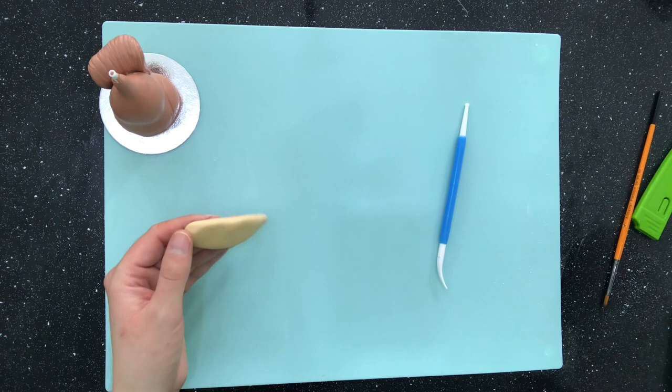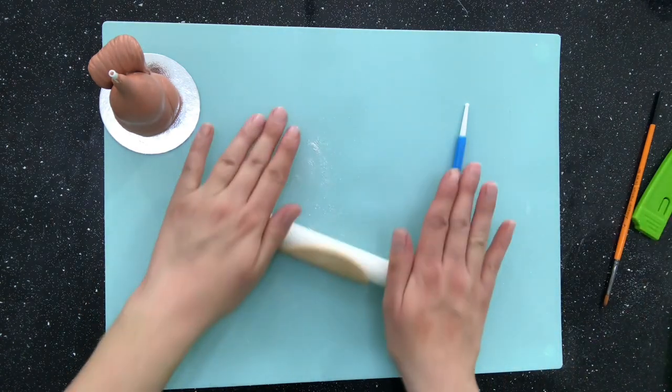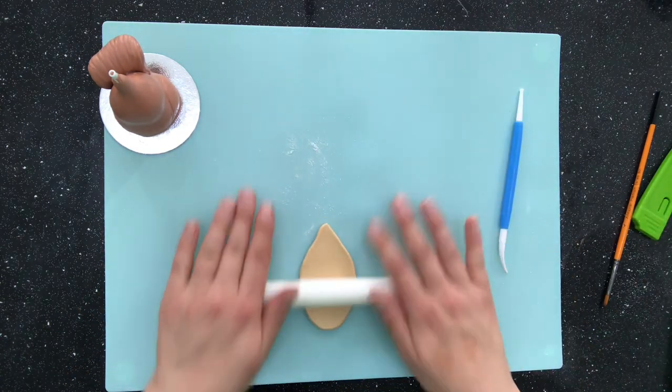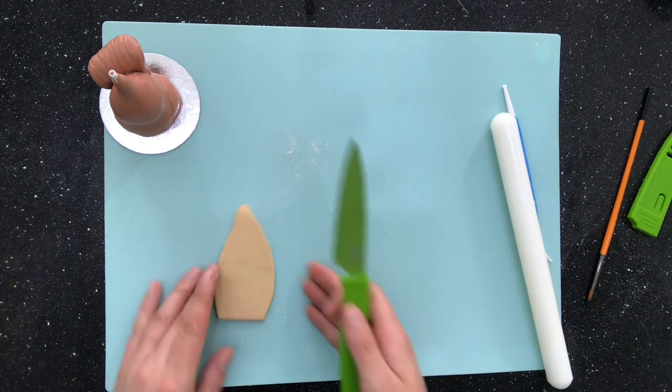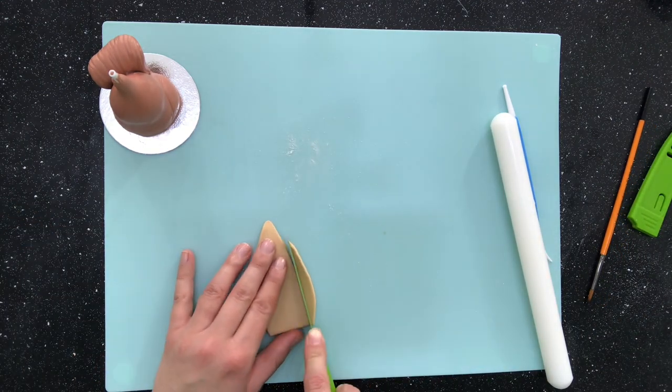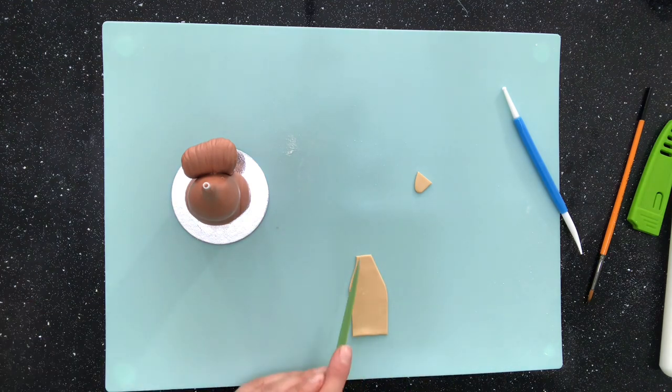Now I take some Autumn Leaf colour modelling paste and roll it into another long petal shape. This is going to be for my squirrel's belly so I just cut it down to the shape that I want and then stick that in place.